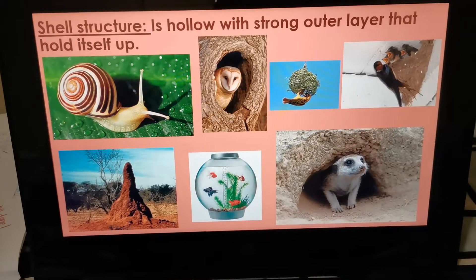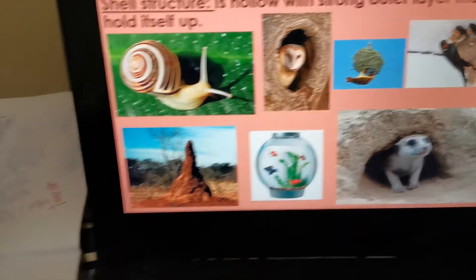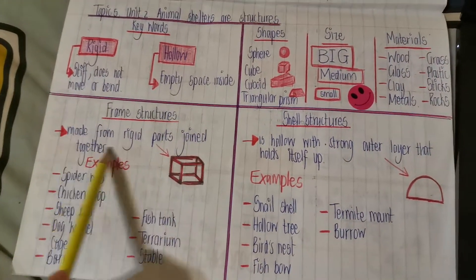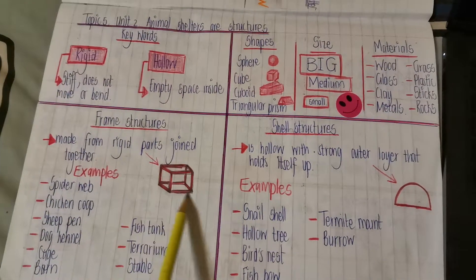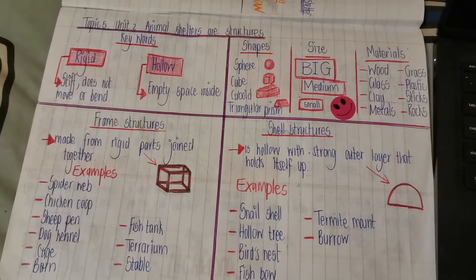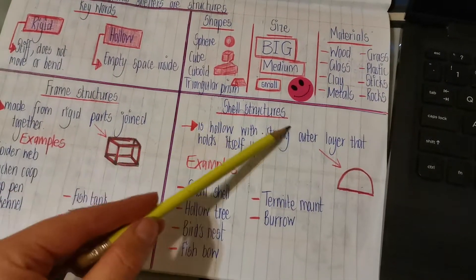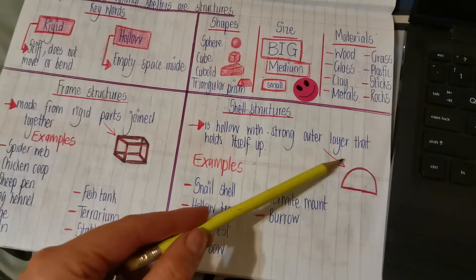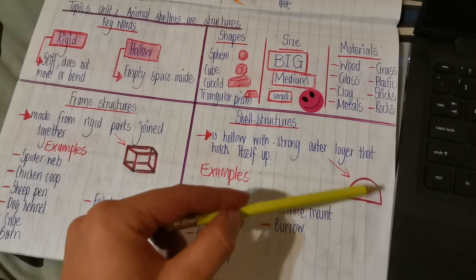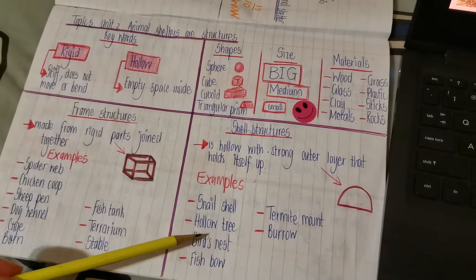Our goal is to identify different animal shelters as shell structures or as frame structures. Let's quickly look at our summary. A frame structure is made from rigid parts joined together — I gave you an example with a little picture to help you, and here are the examples I found in the pictures. Over here we have our shell structures — it's hollow with a strong outer layer that holds itself up. I drew almost like an igloo, a half circle — a dome. And here I have the examples I found in the pictures.